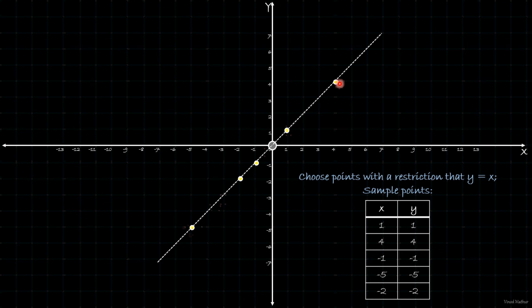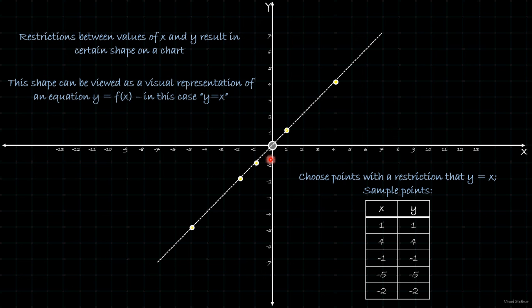When I plot these sample points, very interestingly you would see that they are all in a straight line. From this whole set of infinite points, the moment I have put this restriction of y is equal to x, I have narrowed down that whole thing to a specific shape which is a line. The shape is a visual representation of this restriction.